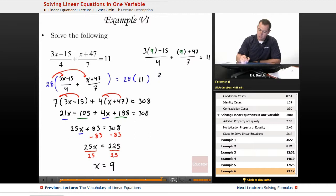All right, so 3 times 9, that would be a 27 all over 4. A 9 plus 47, that would be a 56. And we're hoping that this will equal 11. 27 minus 15, so that's 12 all over 4 plus 56 all over 7.